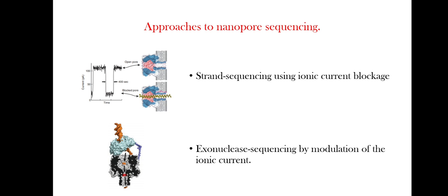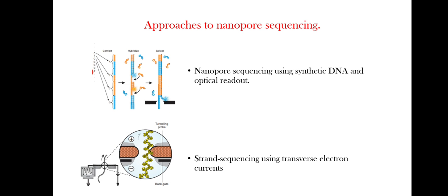The second approach is exonuclease sequencing by modulation of the ionic current. An exonuclease is attached to the top of an alpha-hemolysin pore through a genetically encoded or chemical linker and sequentially cleaves the dNMPs.